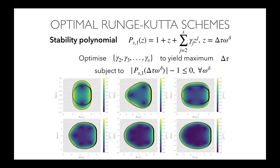Looking at a stability polynomial for a first-order Runge-Kutta method, it has a monomial form: 1 plus z plus some coefficient times z-squared and so on. To keep at most first-order accuracy, we keep the 1 plus z terms. For each stage we add, we have another coefficient that can be optimized — not for higher-order accuracy as is usually done, but to get better stability and allow us to take a larger time step. This gives an optimization problem where we optimize the unknown gammas to yield the maximum pseudo-time step size.